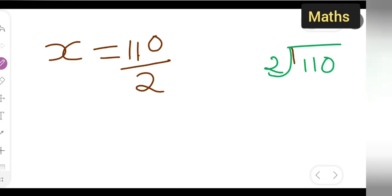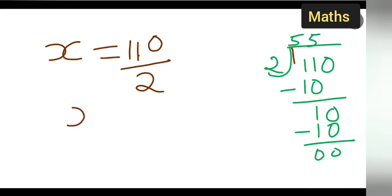110 divided by 2. 2 fives are 10, right. You will get 1 will remain and 0 will come down, and 2 fives are 10. So what is the answer? 55. Your answer is x equals 55.